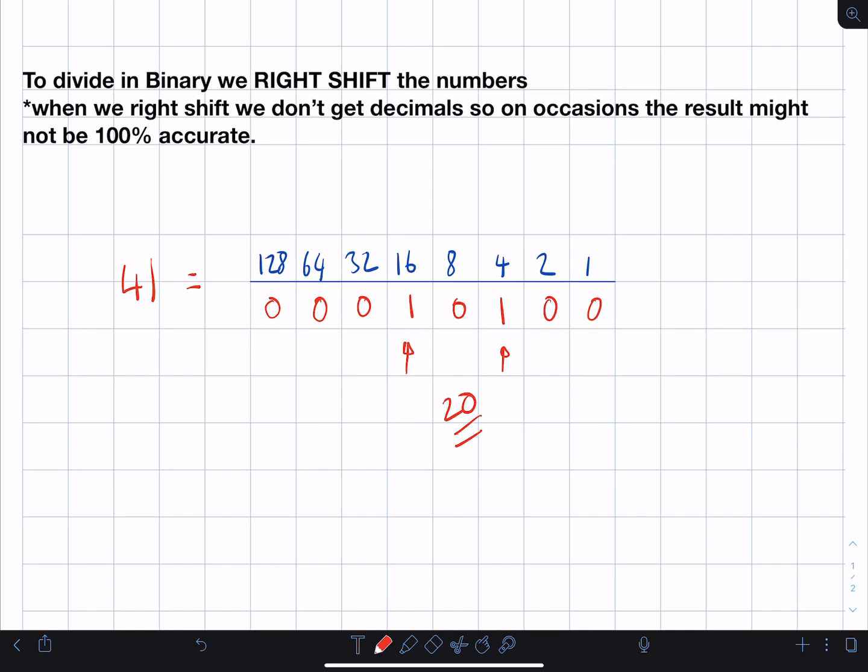Now, much like we did with multiplication—if you haven't seen the video on multiplication, just have a look—we can do a similar thing. So let's move these numbers back. Now let's say we wanted to divide 41 by 4. What we do is we right shift by 2. So when we wanted to divide by 2, we right shifted by 1. If we want to divide by 4, we have to right shift by 2.